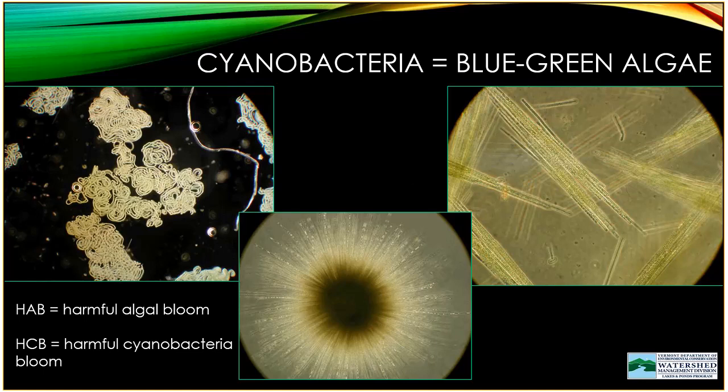There can be diatom blooms, dinoflagellate blooms called red tides in the ocean, and chrysophyte blooms known as golden algae in the southern part of the U.S. Some of these blooms can also be harmful — the dinoflagellate red tides are harmful to people and animals, as are the golden algae blooms. I use the term HCB, harmful cyanobacteria bloom, as a way to distinguish cyanobacteria from these other organisms captured under that more generic term of harmful algal bloom.